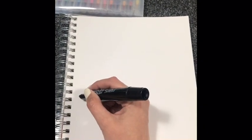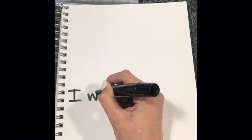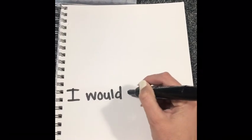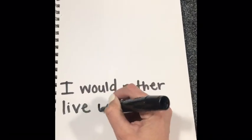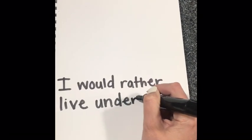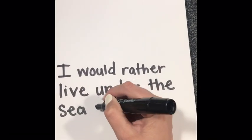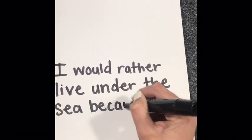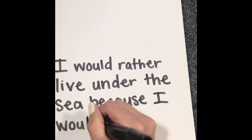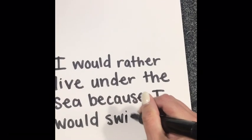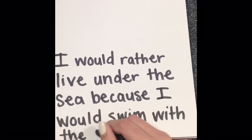First, I'm going to write in a complete sentence where I start with a capital letter. So: I would rather live under the sea because I would swim with the dolphins.